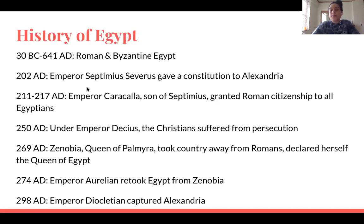Around 202 AD, Roman Emperor Septimius Severus was in charge and he gave a constitution to Alexandria. And then in 211 to 217 AD, Roman Emperor Caracalla, who was the son of Septimius, granted Roman citizenship to all Egyptians at that time. And then further down the road, in 250 AD, under Roman Emperor Decius, the Christians suffered from persecution again.